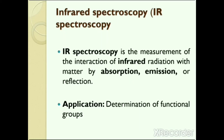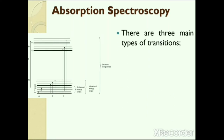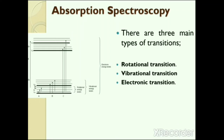Infrared spectroscopy is used to study and identify chemical substances or functional groups in solid, liquid or gaseous forms. There are three main types of transitions: rotational, vibrational and electronic transitions. These occur because there are three main processes by which a molecule can absorb radiation, and each involves an increase of energy proportional to the light absorbed.